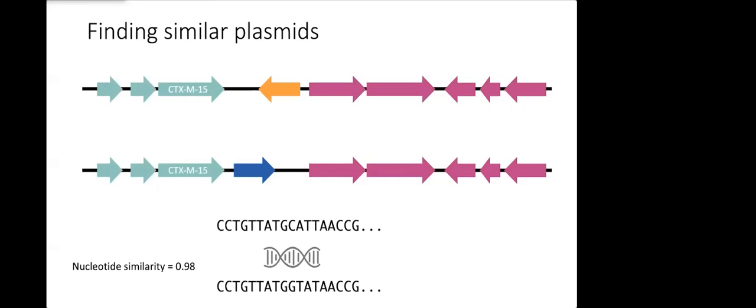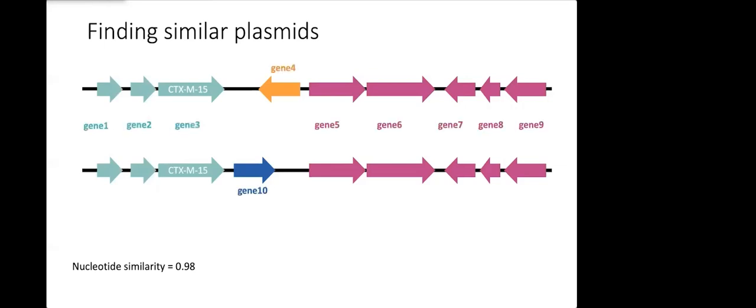In this toy example here we can see our nucleotide sequences are pretty similar, we have a score of 0.98. The next thing we did is we wanted to check how similar the gene content was. To do this for each pair of plasmids we worked out which genes were homologous and homologous genes got the same gene symbol.